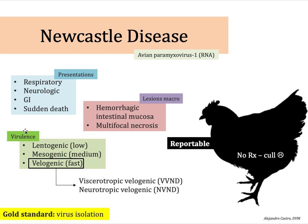For this disease, we have a classification based on virulence: we can classify the virus as lentogenic, mesogenic, or velogenic. The mesogenic and velogenic are the most severe and are usually reportable. However, the lentogenic one is not reportable — keep that in mind for your exams.